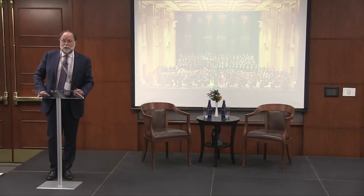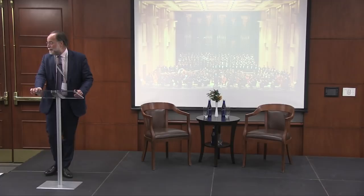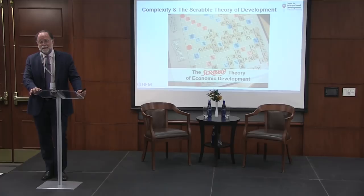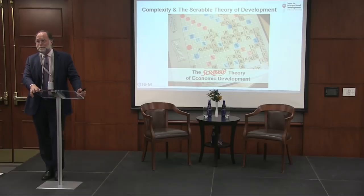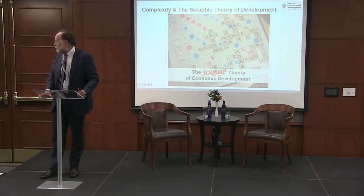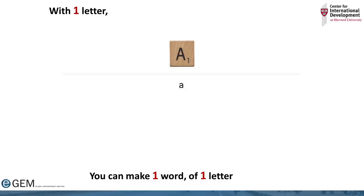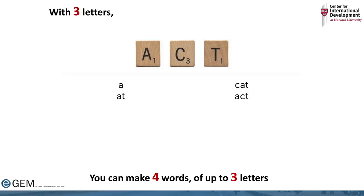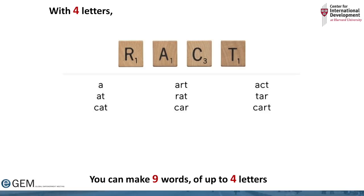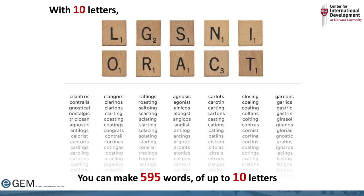Production is a bit like putting a symphony together — everyone brings a different instrument and the whole needs to make sense. That's what we brought together with the metaphor of production being like a game of Scrabble, where products are like words made by putting letters together, and letters are these productive capabilities. With one letter there aren't many words; with three letters you make four words; with ten letters you can make 595 words; and with all 26 letters you can make the whole dictionary. As you increase the variety of know-how in your society, you can do more things, become more diversified, and make more complex products.